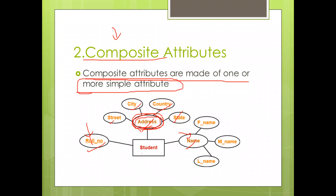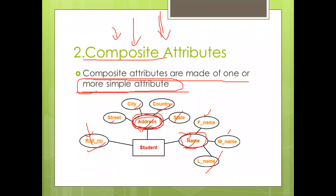Name is also an example of a composite attribute — it can be divided into first name, middle name, and last name. If an attribute can be divided further, it is a composite attribute.